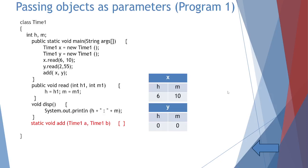Then add(x, y) is called — it's a static method, so called directly without an object. Since x and y are objects, pass by reference occurs, meaning their addresses are passed. In the add method, x has the alias name 'a' and y has the alias name 'b'.